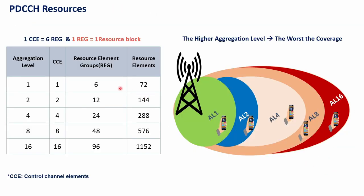In 5G, PDCCH is designed to be transmitted in a configurable control resource set called coreset, while in 4G it is transmitted over the entire bandwidth. Now, before going into frequency and time domain details, let's recall the concept of search space, DCI types, and PDCCH resources. PDCCH resources are translated into aggregation level and CCE — Control Channel Element. The minimum unit of resource used for DCI is the control channel element, which has a one-to-one mapping with aggregation level.